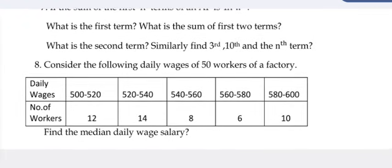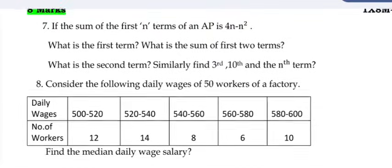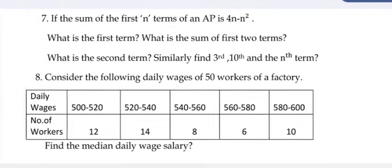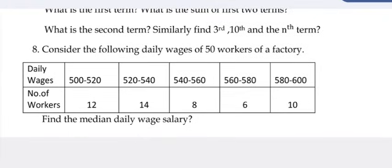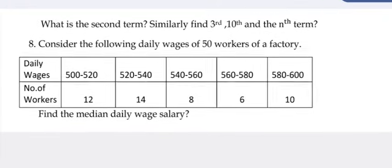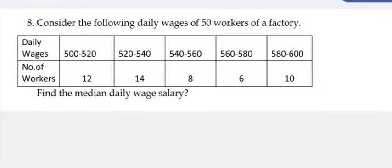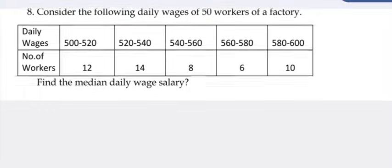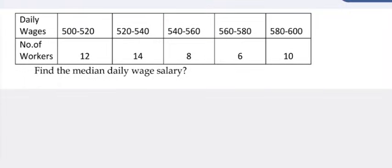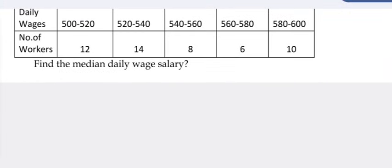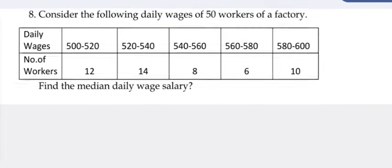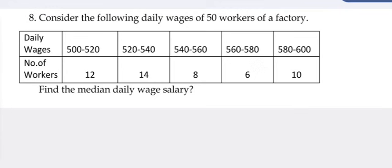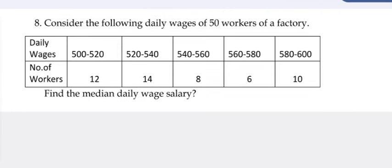Eighth question: Consider the following daily wages of 50 workers of a factory. The daily wages are 500 to 520, 520 to 540, 540 to 560, 560 to 580, 580 to 600. Number of workers: 12, 14, 8, 6, 10. Find the median daily wage salary.